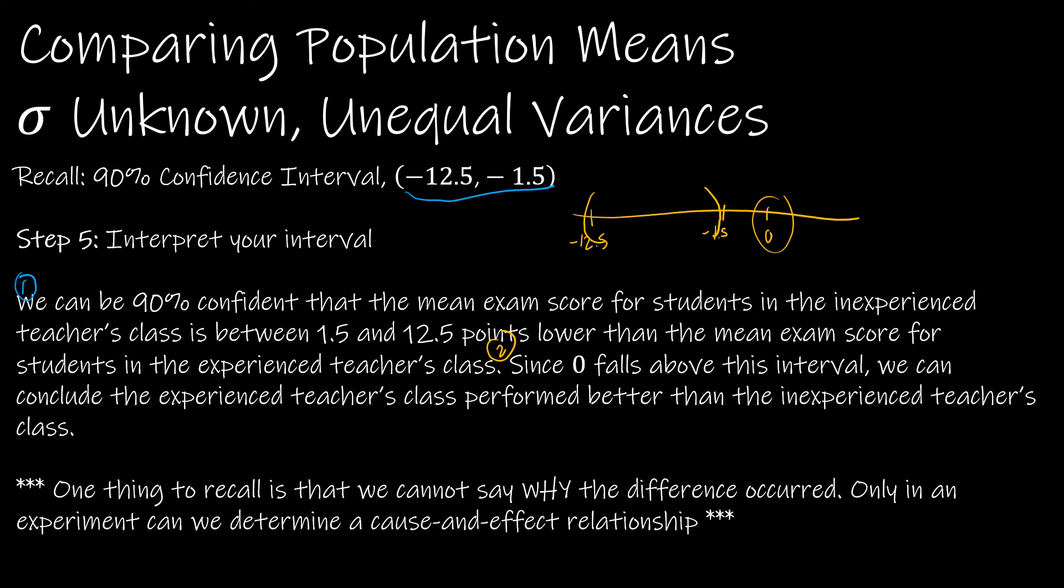The other part of our interpretation should always be talking about zero. If you think about a number line, negative 12.5 is here, negative 1.5 is here, zero is here. So here's my interval. Since zero falls above the interval, we can conclude that the experienced teacher's class performed better than the inexperienced teacher's class. The only way that you can show cause and effect is with an experiment. This is not an experiment. This was just an observation. So I can't say that the reason is because of better teaching. I can just say that there's evidence that those students are performing better.